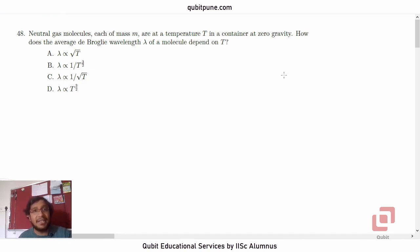This is based on kinetic theory of gases and also the dual nature of matter. The statement is: neutral gas molecules each of mass m at a temperature capital T in a container at zero gravity. How does the average De Broglie wavelength lambda of a molecule depend on T?